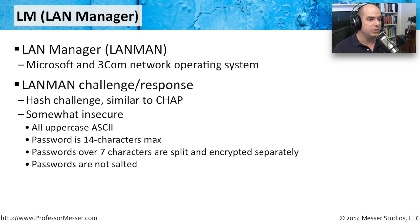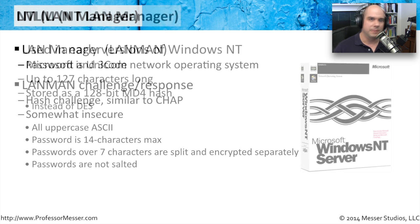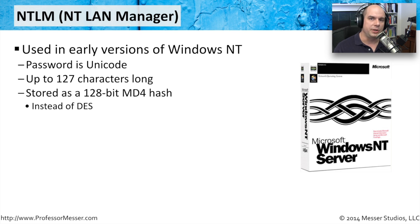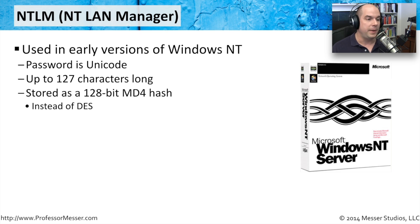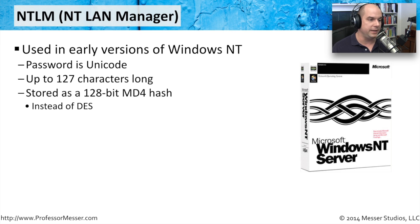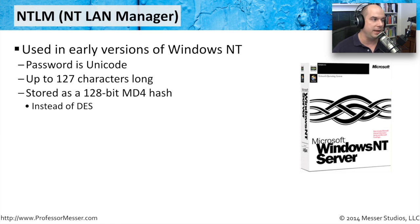Different approaches were needed to handle the LAN Manager configuration, so Microsoft tweaked it to make things more secure. That update came with Windows NT, introducing something called NTLM — NT LAN Manager — used in early versions of Windows NT. The password is now Unicode, offering much more character flexibility, can be up to 127 characters long, and is stored as a 128-bit MD4 hash — generally far more secure than the smaller DES hashes used in LAN Manager.